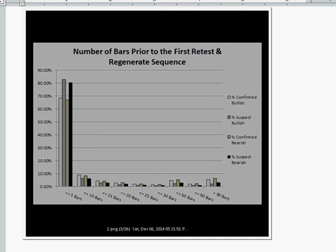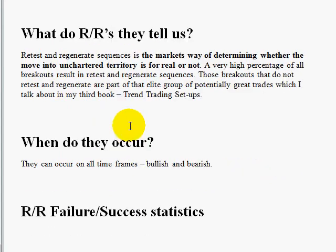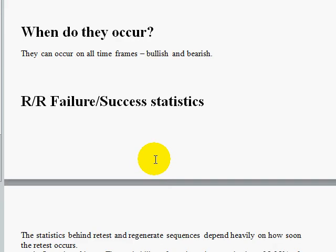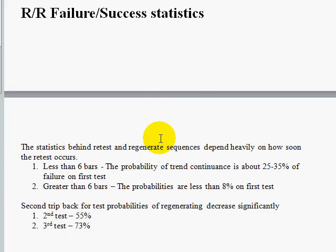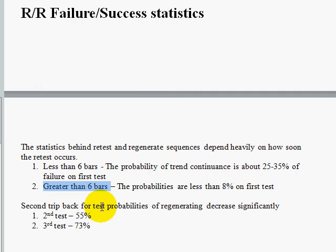When do these things occur? They occur on just about any time frame — bullish, bearish, all time frames, same thing. The retest retrace failures and success statistics: this is an important piece of information that most people aren't quite as attuned to, which is also very valuable to know — and that is that when you come back on less than six bars, your probability of trend continuance isn't as great as if you're greater than six bars.